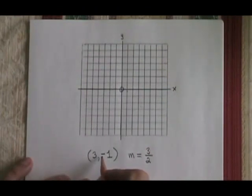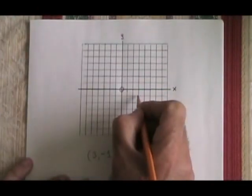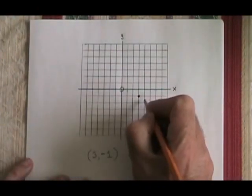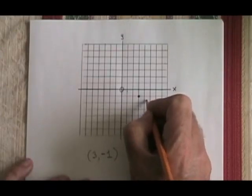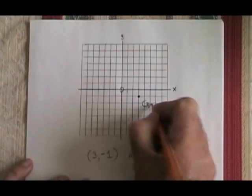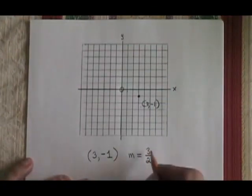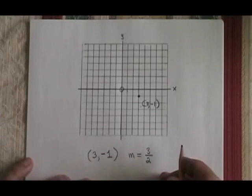First thing I'm going to do is graph my starting point. Here I have 3, negative 1. 3, negative 1 is right here. So I put a dot and I identify the point. Secondly, I look at my slope. The numerator of the slope is the rise. The denominator is the run.